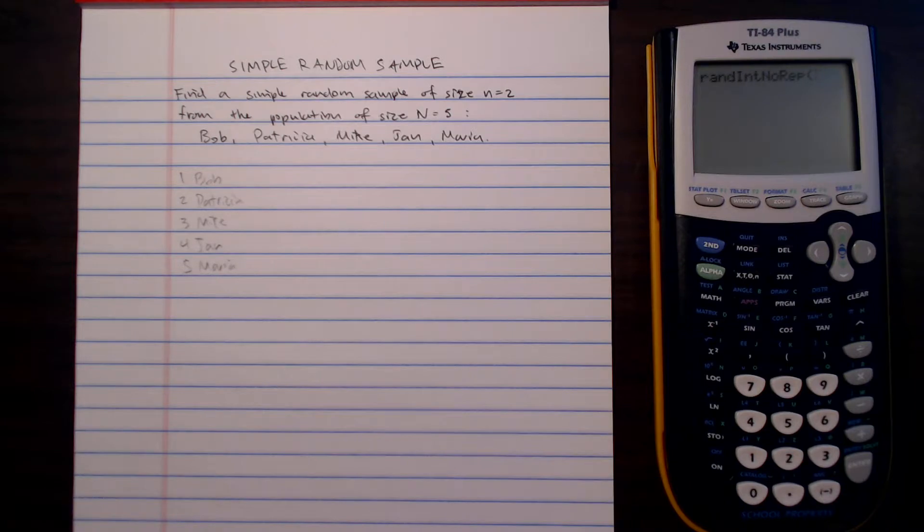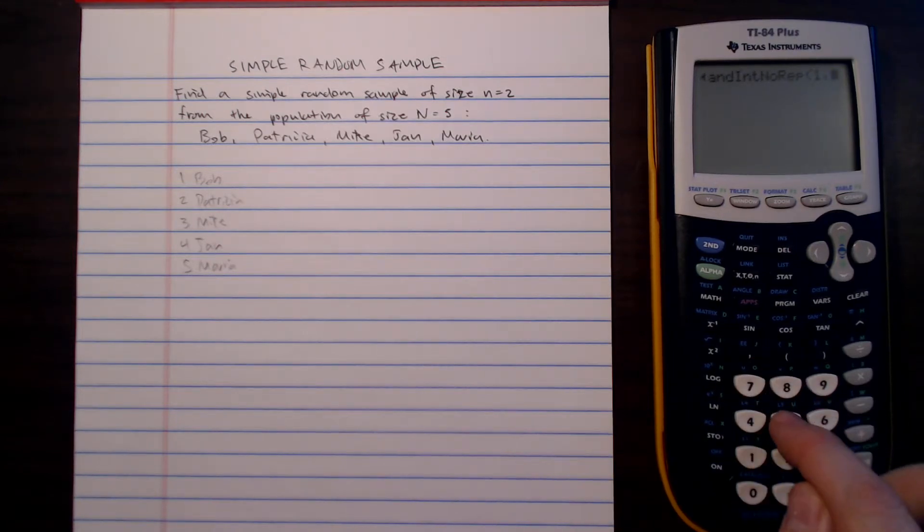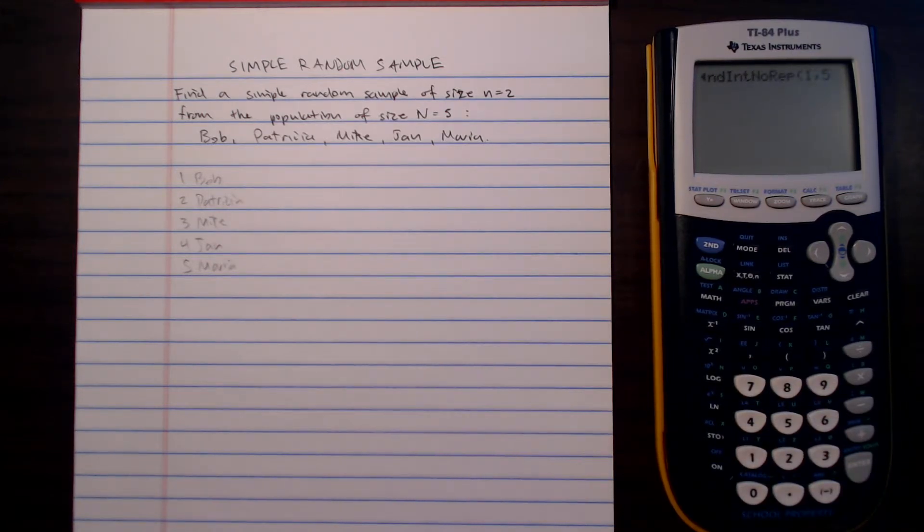What we want to do is enter the minimum or the smallest number and the largest number in our list of numbers that we want to choose from. So we're choosing from one to five, that is enter one comma five, and close the parenthesis.